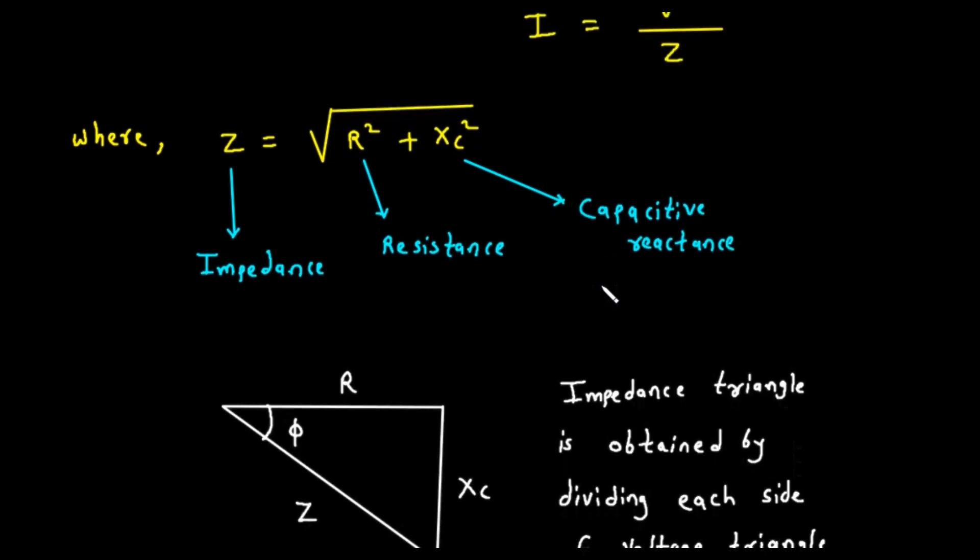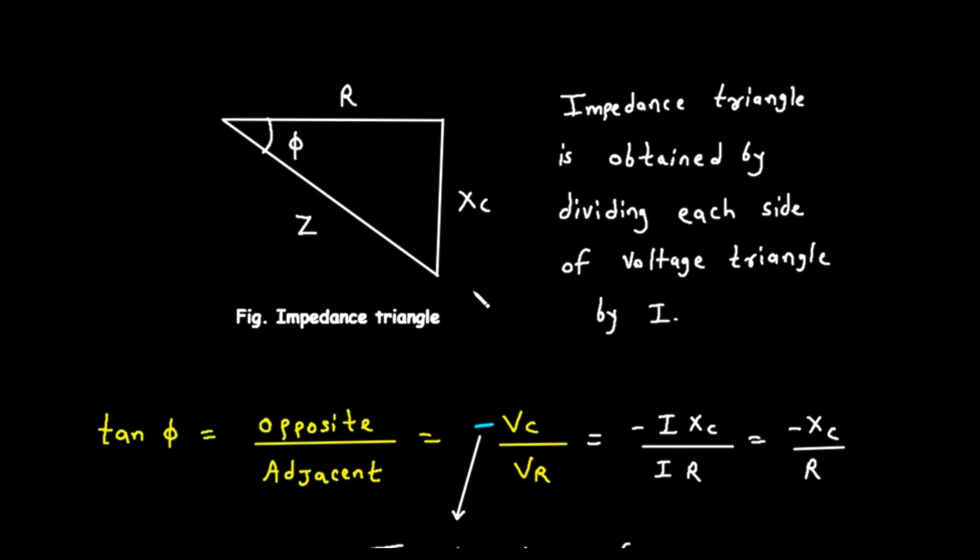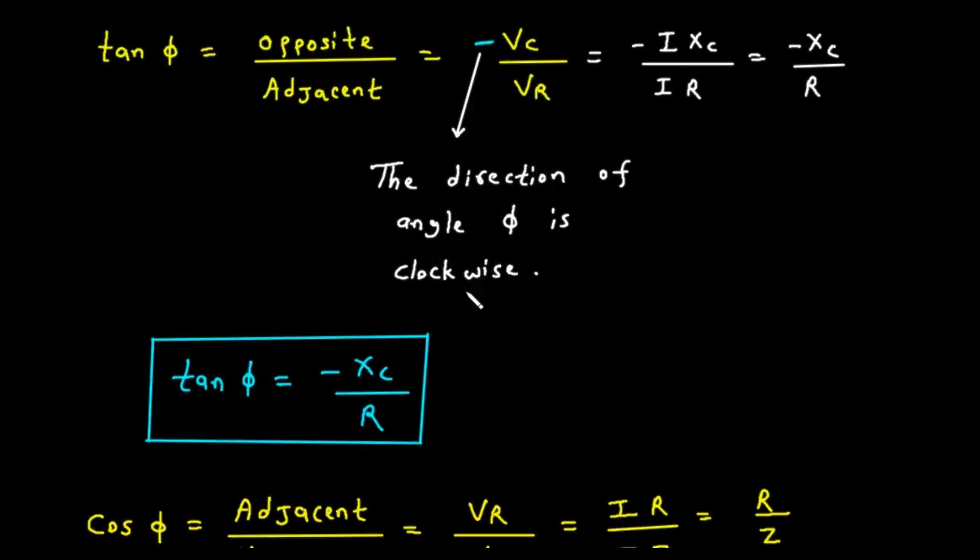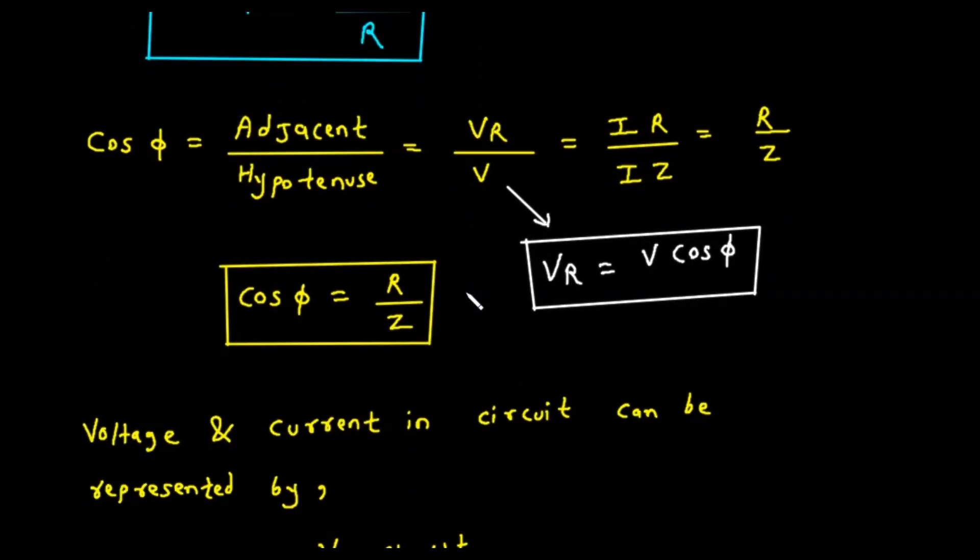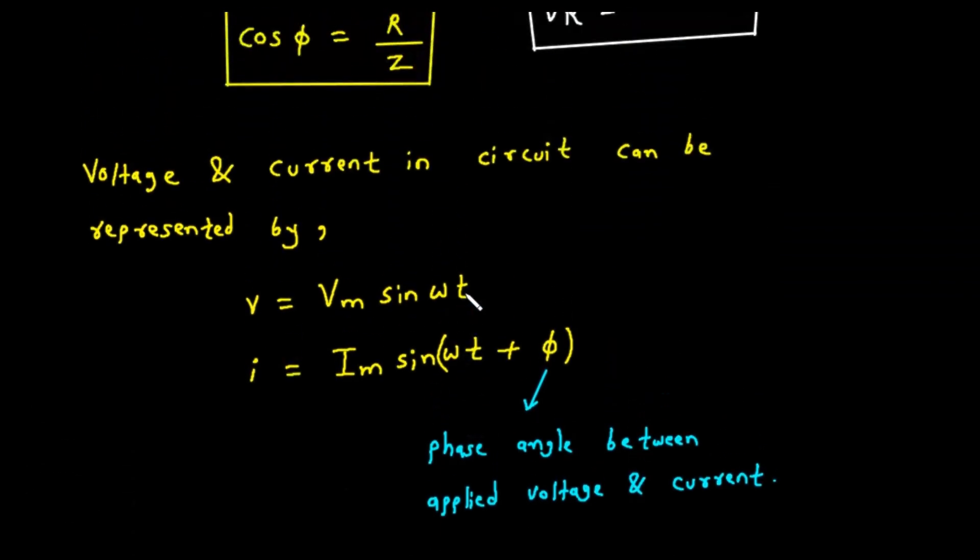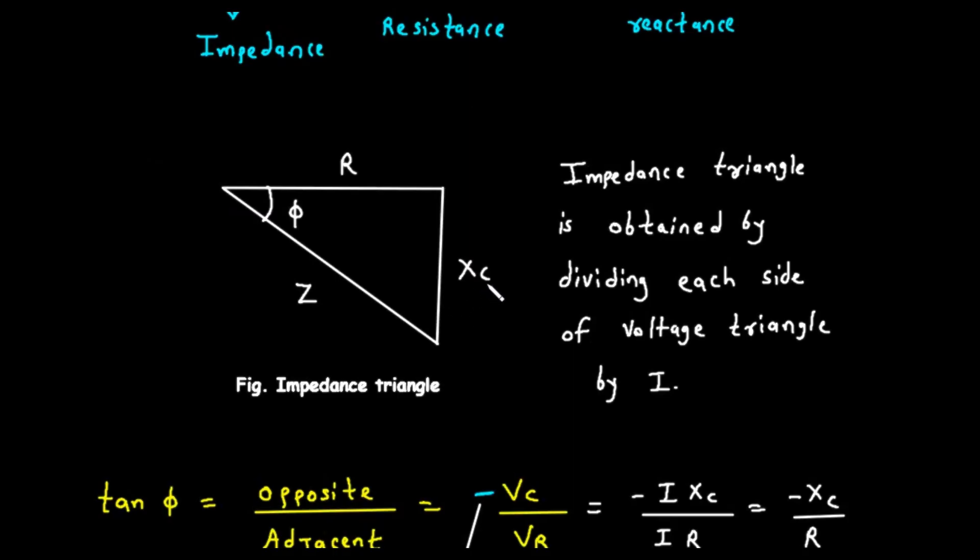Just as we had a voltage triangle, we can also create an impedance triangle, as shown in the diagram. We get this by taking our voltage triangle and dividing the length of every side by the current I. The hypotenuse V divided by I gives us the impedance Z. The adjacent side VR divided by I gives us the resistance R. The opposite side VC divided by I gives us the capacitive reactants XC. This impedance triangle gives us a purely geometric picture of the circuit's opposition to current.